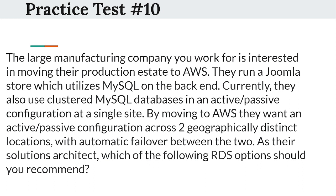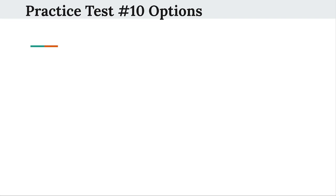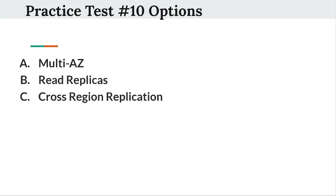The large manufacturing company you work for is interested in moving their production estate to AWS. They run a Joomla store which utilizes MySQL on the backend. They also use clustered MySQL databases in an active-passive configuration at a single site. By moving to AWS, they want an active-passive configuration across two geographically distinct locations with automatic failover between the two. As their solutions architect, which of the following RDS options should you recommend? Option A: Multi-AZ. Option B: Read replicas. Option C: Cross region replication. Option D: Cross region failover.